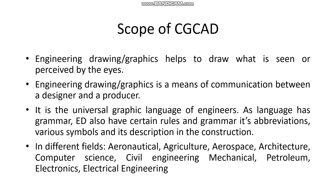Coming to the second point: engineering drawing and graphics is a means of communication between a designer and a producer. The designer is the one who actually designs the product, and the producer is the one who produces that product and brings it to the market. It provides communication between them because it is the universal graphic language of engineers — just as different people speak different languages like Punjabi, Hindi, or Tamil.